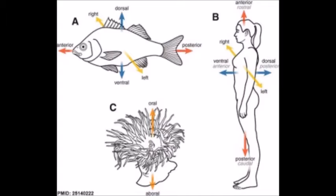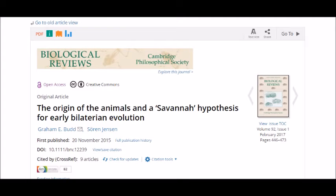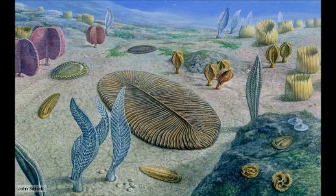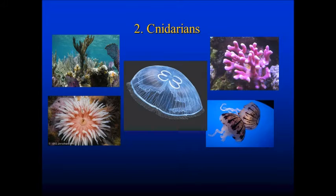Now, whether or not the bilaterian anterior, posterior, and dorso-ventral axes result from homologous oral-aboral axis Cnidarian genes is disputed. Regardless, a large number of bilaterian genes were present prior to the origin of bilaterians. As a side note, the 2015 paper, 'The Origin of the Animals and a Savannah Hypothesis for Early Bilaterian Evolution,' proposes that the contemporary Ediacaran fauna provided the foundation upon which bilaterally symmetrical animals could grow and diversify. We share a common ancestor with Cnidarians that lived about 590 million years ago, and Cnidarians are jellyfish, sea anemones, and corals.